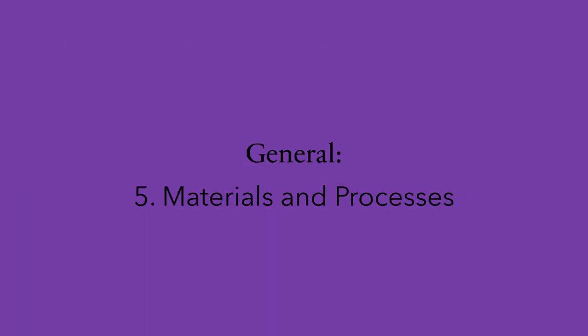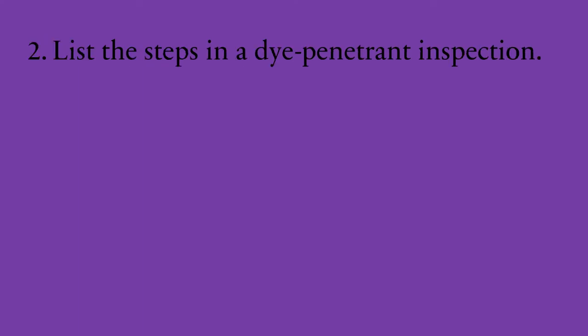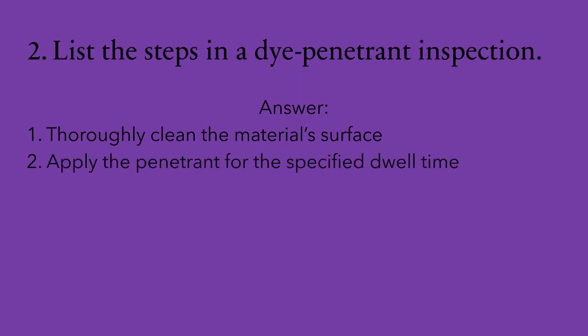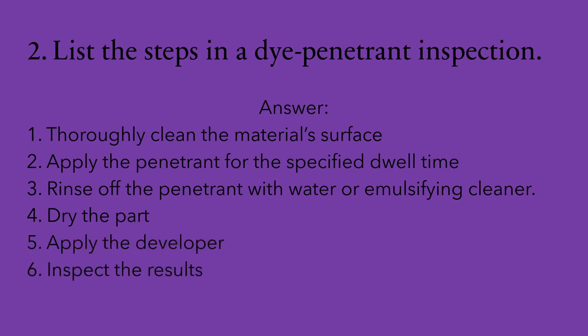Section number five: materials and processes. Question number one: what is a suitable non-destructive testing method for detecting surface cracks on aluminum casting or forging? Dye penetrant inspection can be used. Question number two: list the steps in a dye penetrant inspection. The steps are: one, thoroughly clean the material surface; two, apply the penetrant for the specified dwell time; three, rinse off the penetrant with water or emulsifying cleaner; four, dry the part; five, apply the developer; and six, inspect the results.